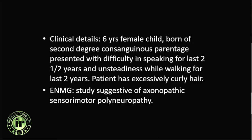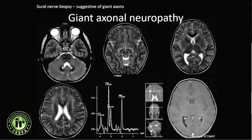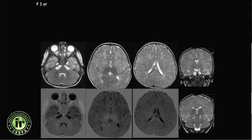Another patient — a six-year-old with abnormally curly kinky hair and sensory-motor neuropathy on EMG — showed diffuse white matter changes, abnormality in the dentate nuclei, and spectroscopy showing non-specific increase in the choline-to-creatine ratio and reduction in NAA. Diffuse white matter changes also involved the corticospinal tracts. This is giant axonal neuropathy.